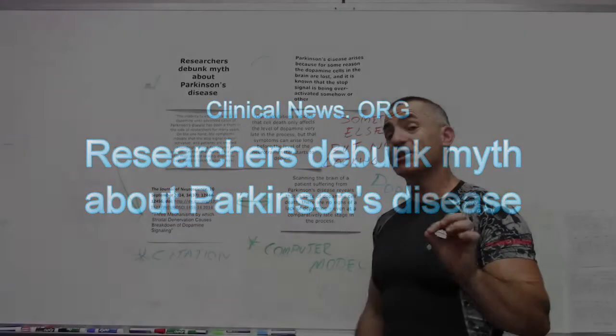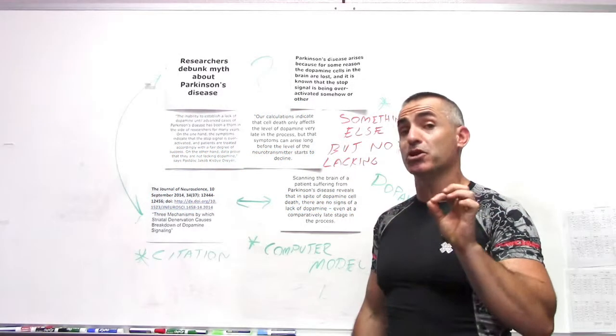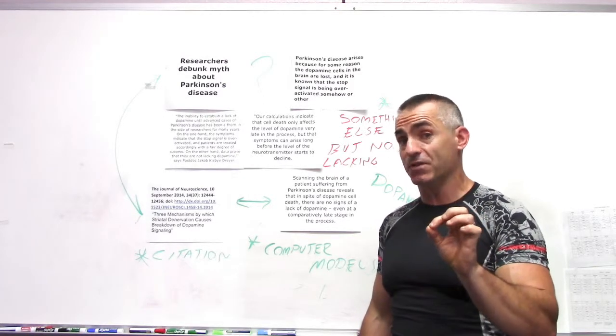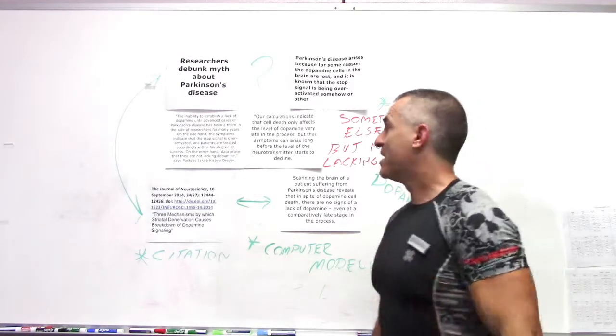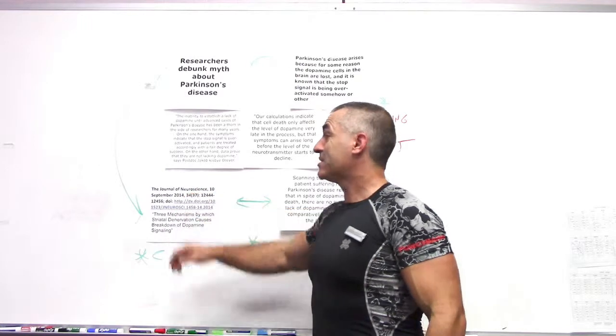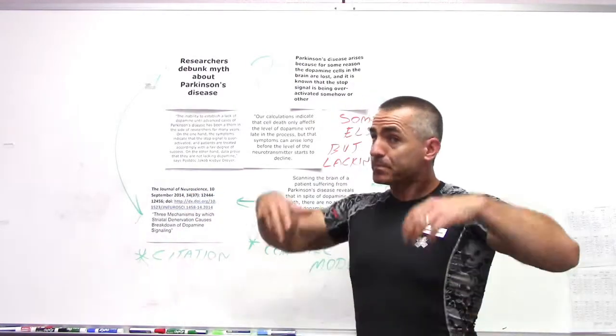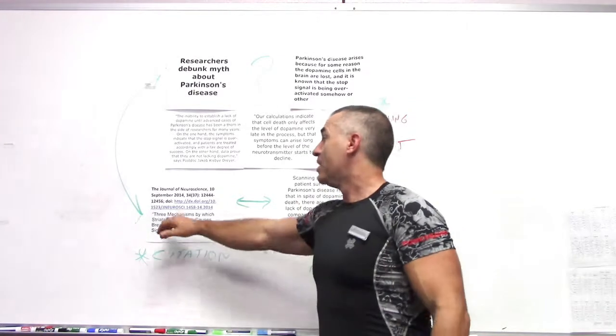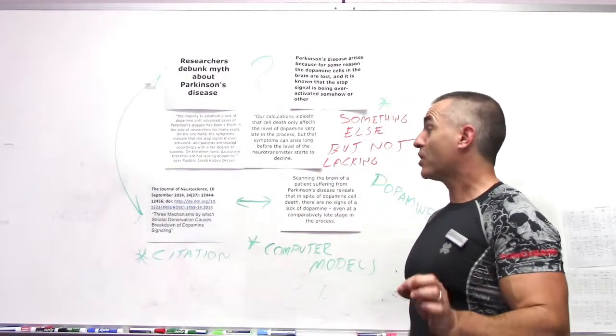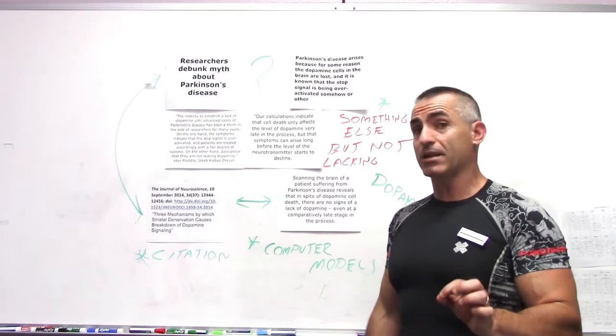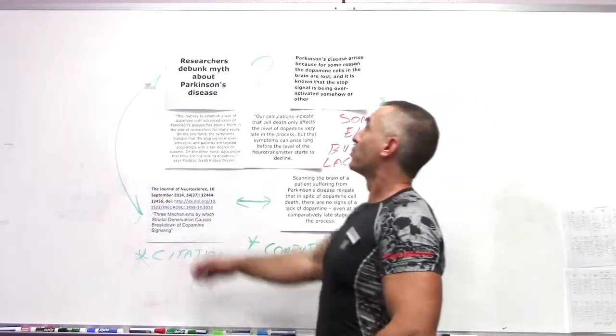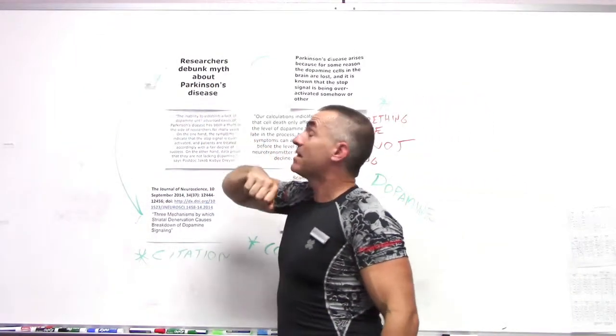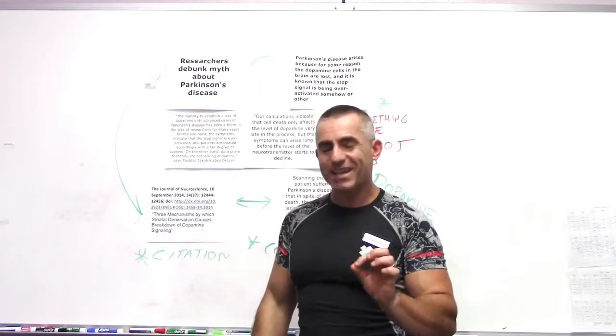In a very interesting counterintuitive study regarding Parkinson's and dopamine levels, published in the Journal of Neuroscience on September 10th, 2014. The title of the article is 'Three Mechanisms by Which Striatal Denervation Causes Breakdown of Dopamine Signaling,' or 'Researchers Debunk Myths About Parkinson's Disease.'